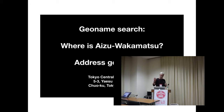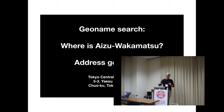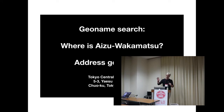Geoname search is, for example, when you ask where is Aizu Wakamatsu. Address geocoding is when you have an address like Tokyo Central Post Office, 5-3, Yaesu 1-Chome, and want to go there — that's called geocoding. Given a building address, you look for some coordinates.